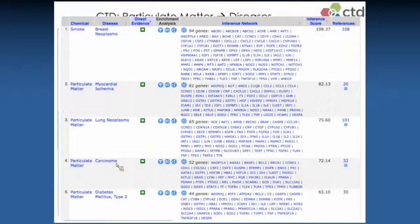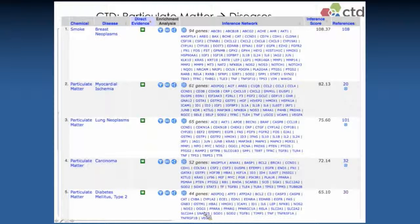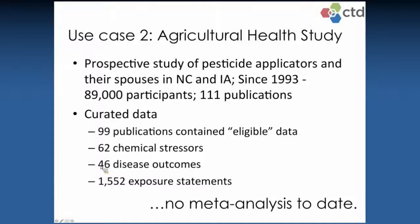Going to the particulate matter Exposure Studies tab gives a whole list of other disorders that may be associated with particulate matter. Another example: we just submitted a paper to EHP that's under review, talking about this exposure module to CTD. One of the studies we've focused on heavily is the Agricultural Health Study, which many of you may be familiar with. Jane Hoppen, now in our toxicology program at NC State and critical in this study, helped us a lot. We set out to curate the whole of the Ag Health Study — there are now 111 publications associated with it.